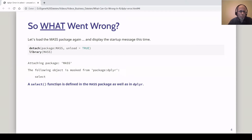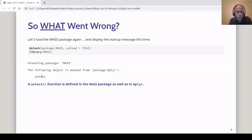On the previous slide I didn't show the startup message when loading the MASS package, so I'll do that here. First I unload the package using detach with unload equals TRUE, then load the MASS package again. Now we get the startup message: 'Attaching package MASS. The following object is masked from package dplyr: select.' There's a select function in dplyr that we want to use, but there's also a select function in the MASS package. The rule in R is that the package loaded last takes precedence, so the MASS select function takes over — and since it's designed for a different purpose and expects different arguments, that's why it failed.